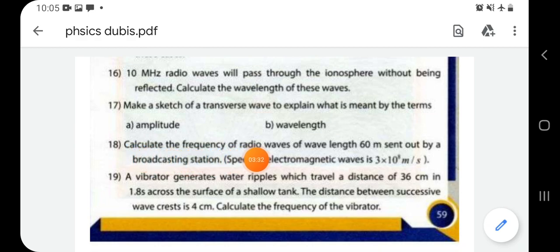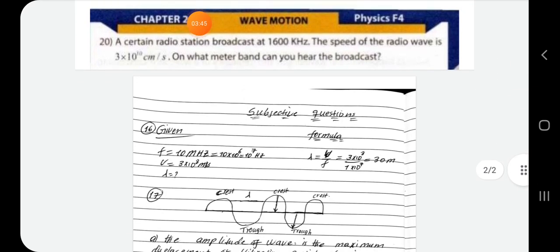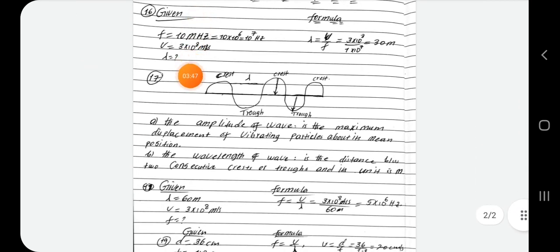The frequency of radio waves of wavelength 60 meters sent out by broadcasting station. Speed of electromagnetic waves 3 times 10 to the power meter per second. The frequency of radio waves of wavelength 60 meters sent out by broadcasting station. The speed of electromagnetic waves 3 times 10 to the power meter per second.